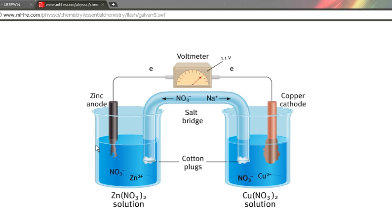EMF, or cell potential, can be broken into the anode side and the cathode side. And it's measured against a standard, which is the standard hydrogen electrode, or SHE.